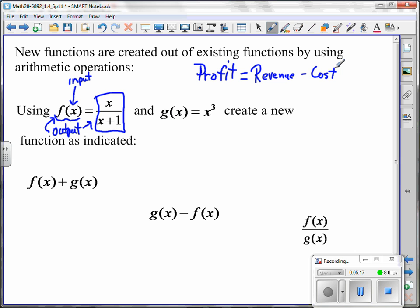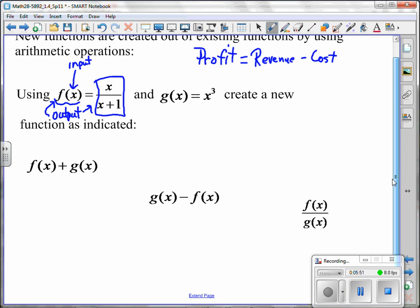Cost, same thing. It has a variable, it has a letter, it has a name, an input of how many units, and then some numbers associated that say if I make this many units, it's going to cost me this much money. So when we find profit, we're doing exactly the same things that we have on this slide, and that is we're taking two functions and combining them in some way to create a third function, a new function called profit.